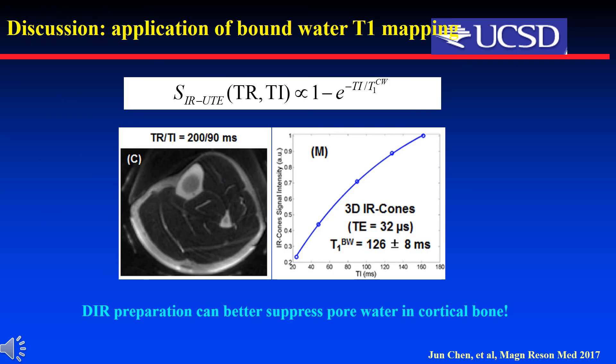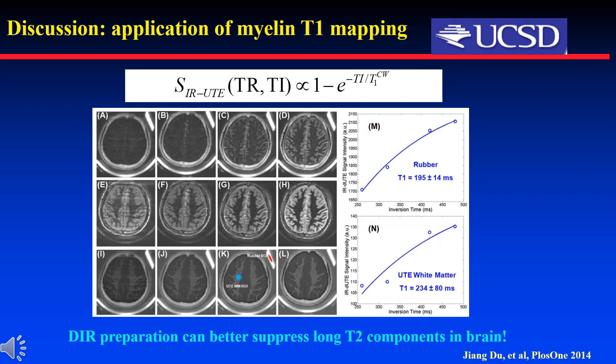The proposed 3D DIR-UTE-CONES sequence can also be used for bone water T1 mapping, since DIR preparation can better suppress pore water in cortical bone than the single IR method. It can also be used for myelin T1 mapping, since DIR preparation can better suppress long T2 white matter and gray matter in the brain.